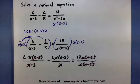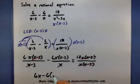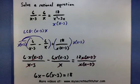So if you look at what's left over, we have a 6x minus a 6 times x minus 3 equals 18. Now, this is a much nicer equation that we can go ahead and solve.